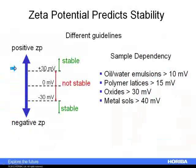The reason we often measure zeta potential is to understand the stability of the system. In general, particles with very low charge may not be stable and are more likely to aggregate. As we do something to modify the surface of the particles and increase the zeta potential — either negatively or positively — we're creating more stable dispersions. A lot of people use the SZ100 for dispersion stability, using particle size and zeta potential as tools to formulate nice, stable dispersions.